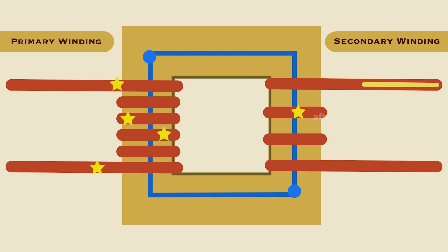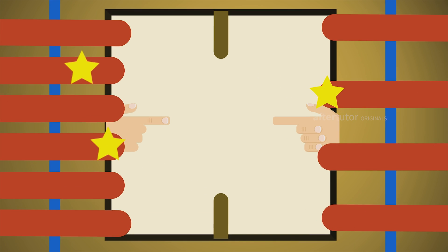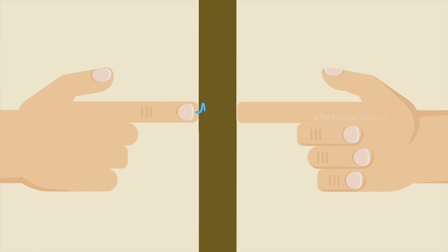Since the number of turns in the secondary winding is less, the induced voltage will be low. So, without making an electrical contact, the voltage in the primary winding is transferred to the secondary winding.